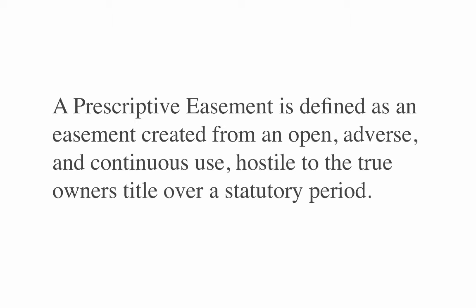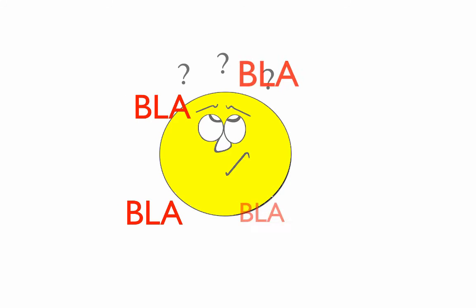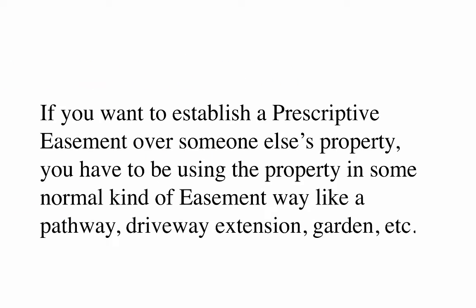A prescriptive easement is defined as an easement created from an open, adverse, and continuous use hostile to the true owner's title over a statutory period of time. This definition may sound complex, but it is a concise way to articulate why it is difficult to get a prescriptive easement over another person's property.